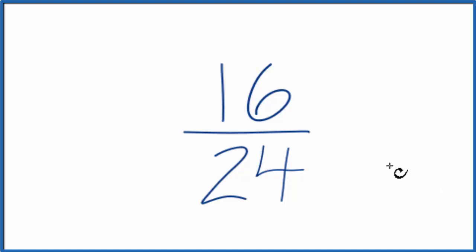So we need to find a common multiple, the greatest common multiple of both 16 and 24. Let's list the factors for both.